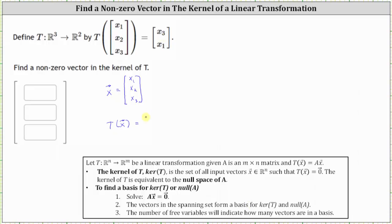This zero vector lives in R², so we have the vector (0, 0). But we know this output vector is the vector (x₃, x₁).